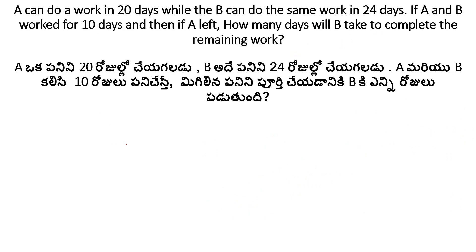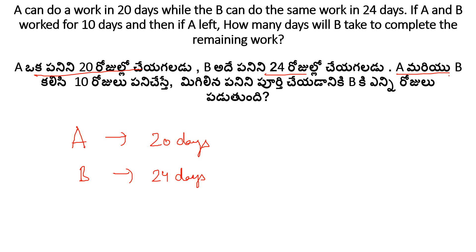Next question: A can do a work in 20 days while B can do the same work in 24 days. If A and B worked together for 10 days and then A left, how many days will B take to complete the remaining work?